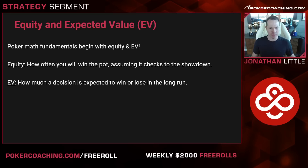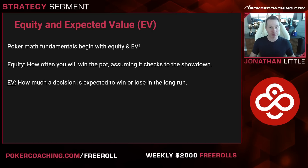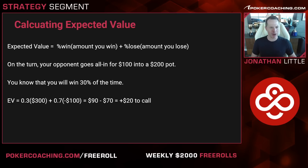Expected value is how much a decision is expected to win or lose in the long run. So equity is how often you will win; expected value is how much you will win. Your expected value equals the percentage of the time you win times the amount you win, plus the percentage of the time you lose times the amount you lose — and that second term will be a negative number.